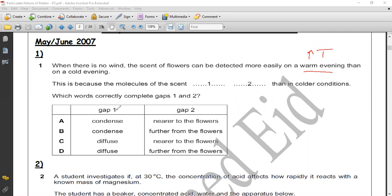Which words correctly complete gap 1 and 2? From multiple choice, gap 1: condense - no, it's not condense, it's diffuse. The correct answer is diffuse. So we have C and D. But in C, diffuse near to the flower. In D, diffuse further from the flower. By increasing temperature, particles move faster, so they diffuse further from the flower. So the correct answer is D.